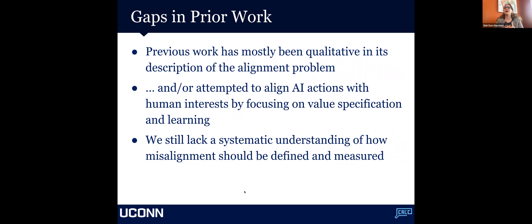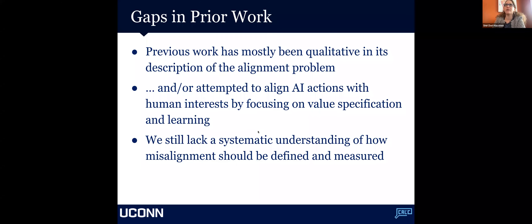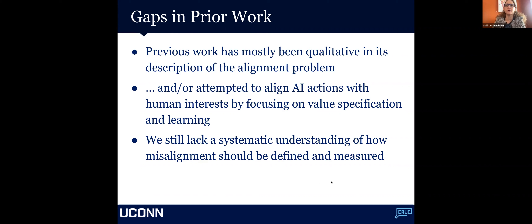Prior work has been mostly either qualitative in its description of the alignment problem, or it attempts to align AI actions with human interests by focusing on things like value specification and learning. But — and this is joint work with Aidan Kirans in the audience and my colleague Hananel Hazan at Tufts — we identified a lack of any systematic understanding of how misalignment should be defined and measured. We need to learn more about what it even means for something to be misaligned.